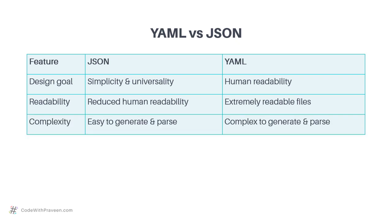Coming to complexity, JSON is generally easy to generate and parse. Since it follows a specific structure using indicators like double quotes and curly braces, there are various tools that know how to parse JSON. However, in the case of YAML, since it primarily uses indentation, it is a bit complex to generate and parse. So you need to be careful when working with YAML for generation and parsing logic. Using libraries makes it safer.